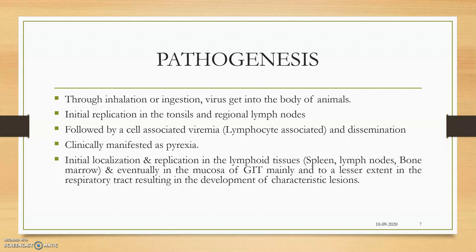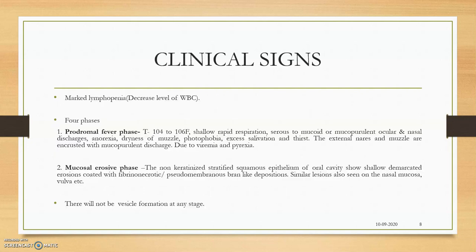To a lesser extent, the virus also localizes in the respiratory tract, producing lesions particularly in the upper respiratory tract. Clinical signs progress through four phases. The first is the prodromal or fever phase, caused by pyrexia and viraemia: photophobia, dryness of muzzle, mucopurulent nasal discharge, elevated respiratory rate, and high temperature.